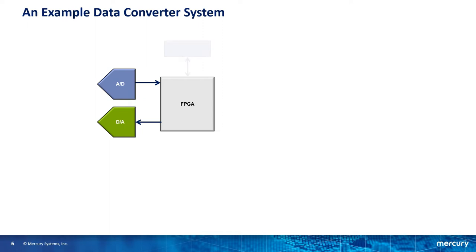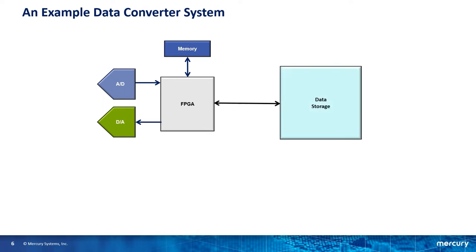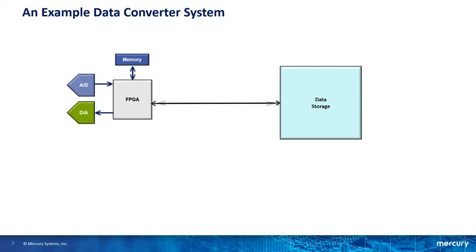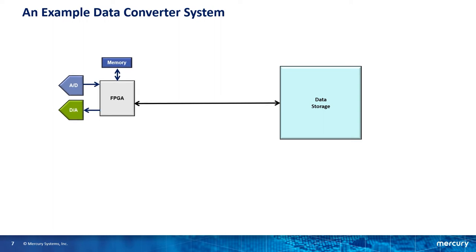There is likely some memory in the system for data buffering or as a resource for processing. And while the entire application might live on the FPGA, some applications require storing the data once it's acquired. Or in the other direction, data storage might be used to stream data to the FPGA where it gets played out of the D to A converter.